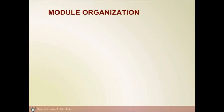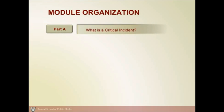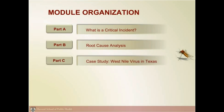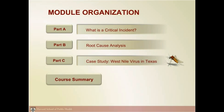This module is organized into three parts. Part A describes what is a critical incident. Part B describes how to use the root cause analysis method to analyze a critical incident, and Part C applies root cause analysis to an actual event, an outbreak of West Nile virus in Texas. At the end of the course, we'll have a short summary.